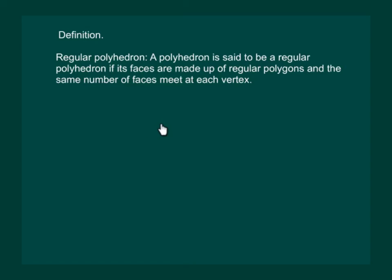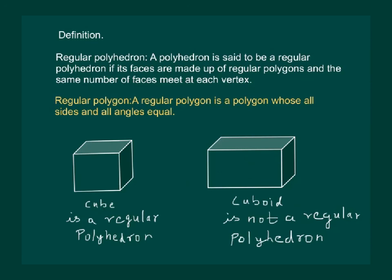Now you read the definition of regular polyhedron. You will understand that the faces of a regular polyhedron are congruent regular polygons and its vertices are formed by the same number of faces. And so we can say that cube is a regular polyhedron while cuboid is not a regular polyhedron.